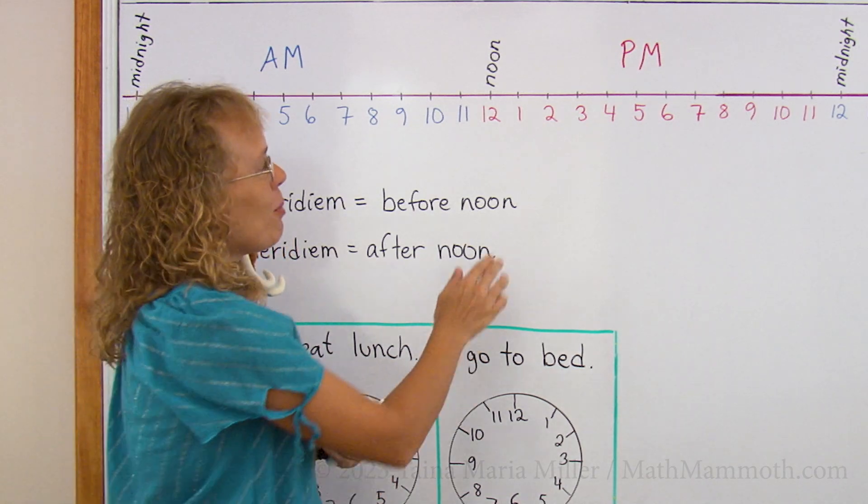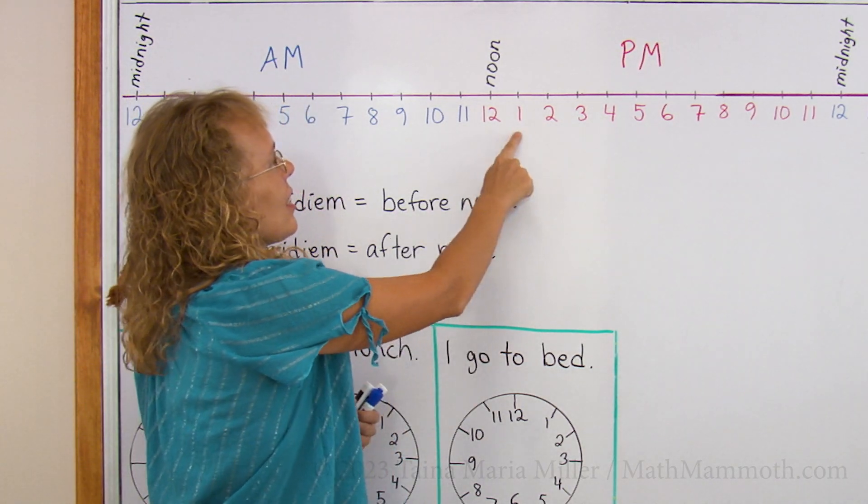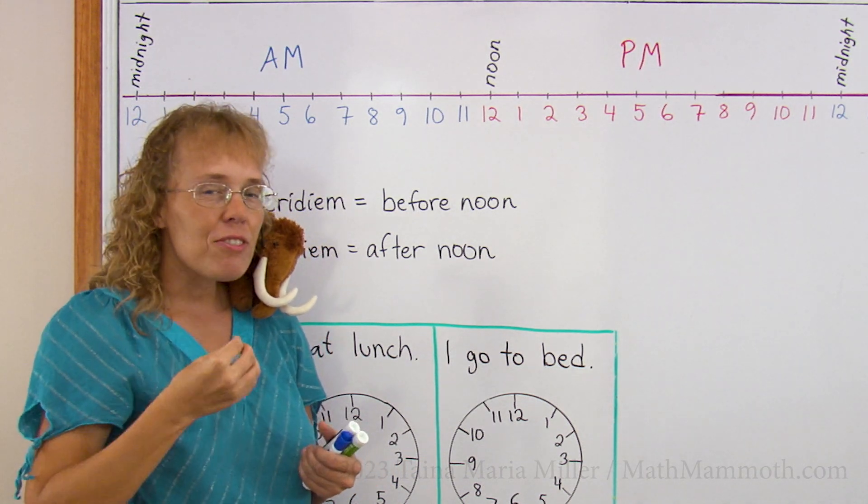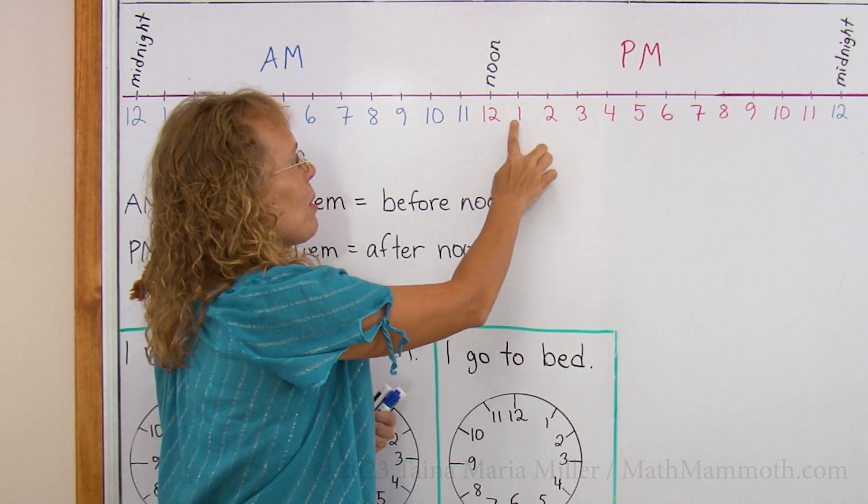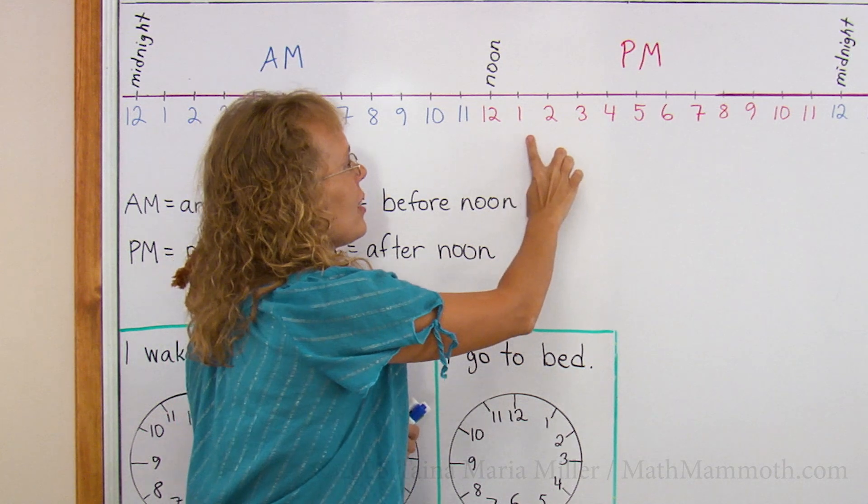And then noon is usually a time when many people eat something, at lunch, or maybe at 1. This is now the start of the PM hours, afternoon hours. 12 PM, 1 PM, 2 PM. It is afternoon.